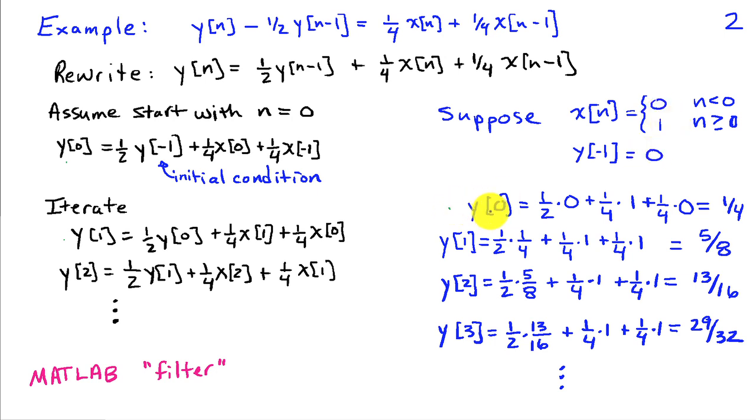We can write y[0] as 1/2 times 0 plus 1/4 times 1 plus 1/4 times 0, which is 1/4. Then use this value y[0], and we'll have y[1] is 1/2 times 1/4 plus 1/4 times 1 plus 1/4 times 1, which gives us 5/8. To get y[2], I'm going to take 1/2 times y[1], which is 5/8, and add that up, and I get 13/16, and so on. It's very straightforward to compute the numerical values of the output using this difference equation.